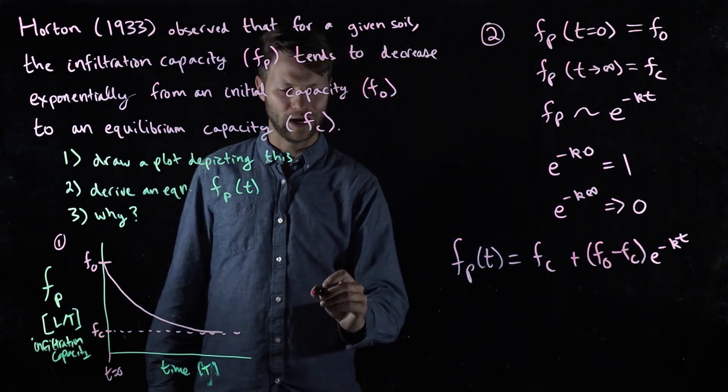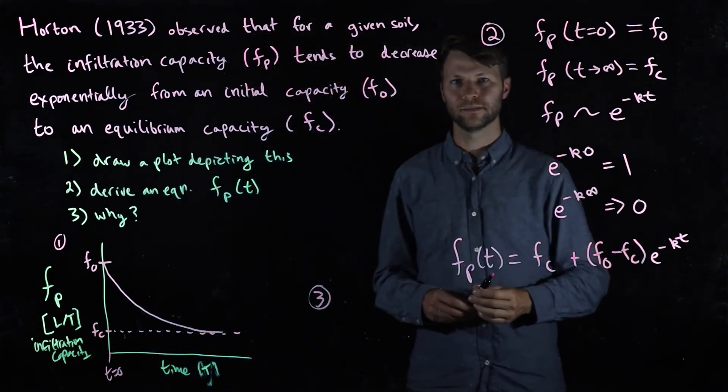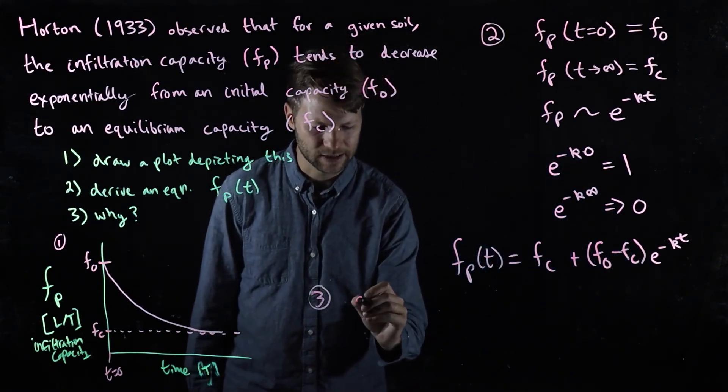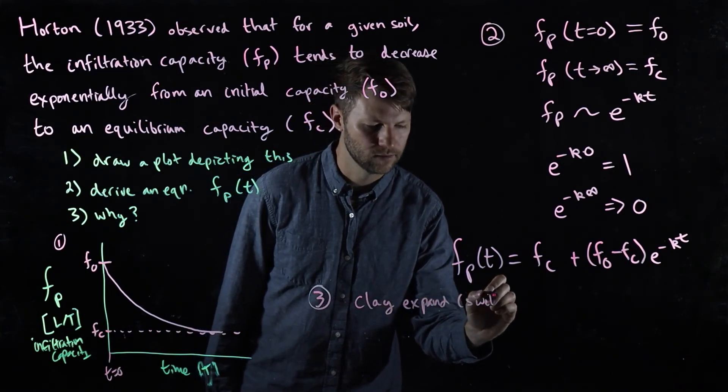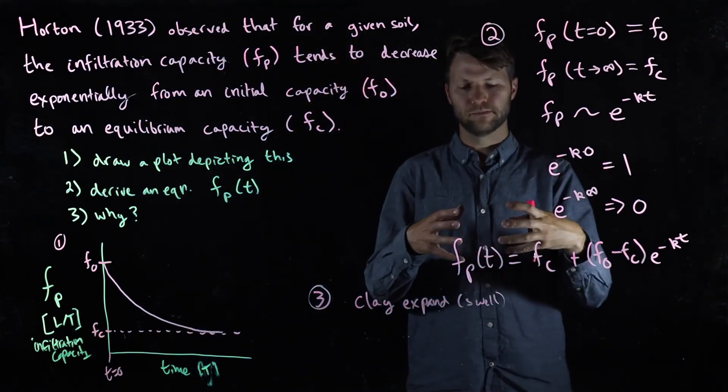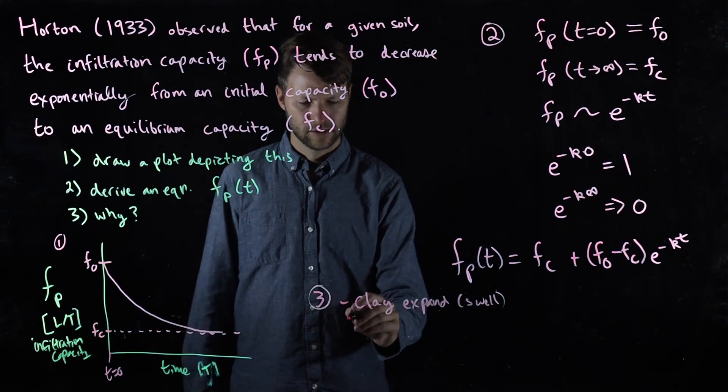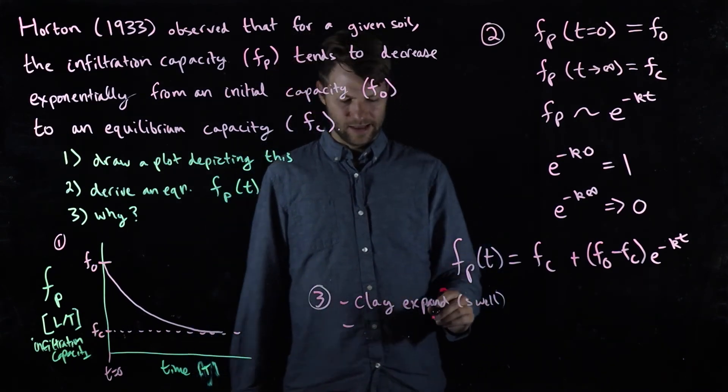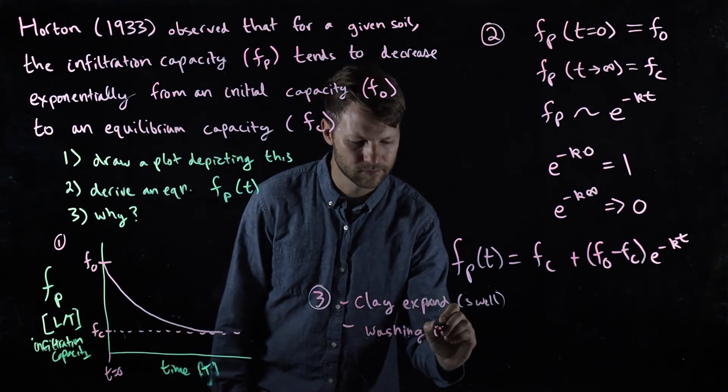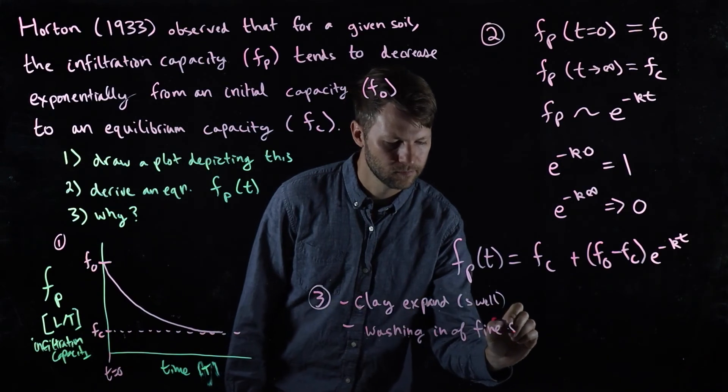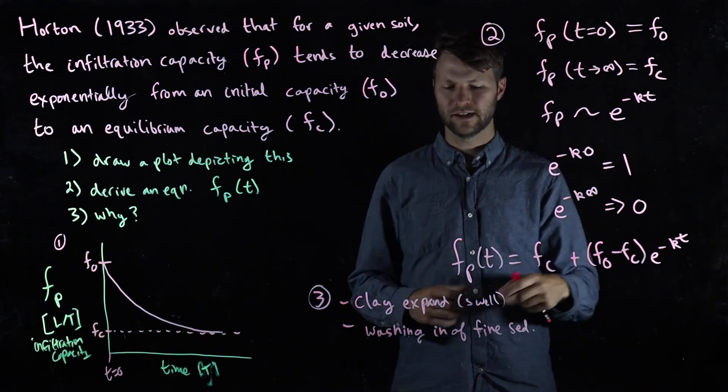So finally, why? Well, there's a variety of mechanisms that may vary in importance across different places. One is that clays may expand when they get wet or swell, so as these clay molecules expand it's going to decrease the pore sizes, making it harder for water to infiltrate. It may be the case that as water is flowing over the surface there are fine sediments, and those sediments fill the pore spaces between the bigger grains and cause it to clog.